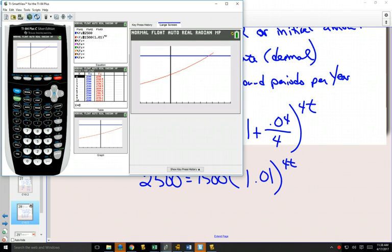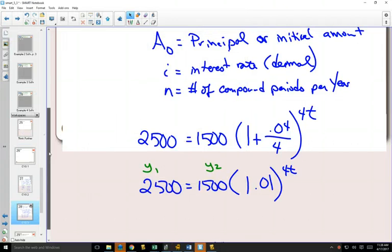So fast, so exciting. Yes, there we go. So now that they've intersected, we can go back to second calculate, where they intersect—number five. It's going to put your cursor on one of the curves. It says 'is this your first curve?' Sure, push enter. 'Second curve?' Sure, push enter. 'Guess?' Push enter. And it will tell us that it happens at 12.83.